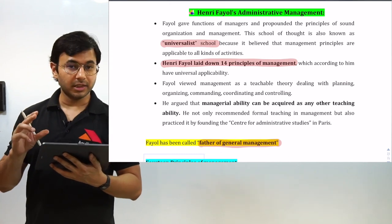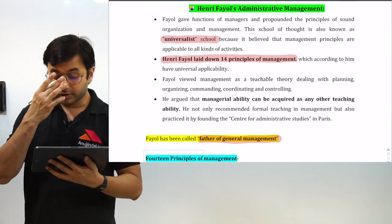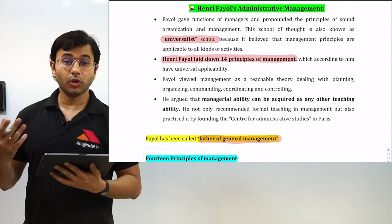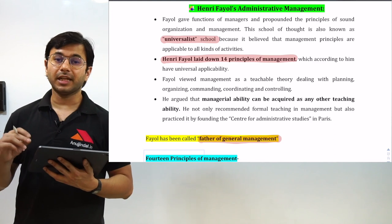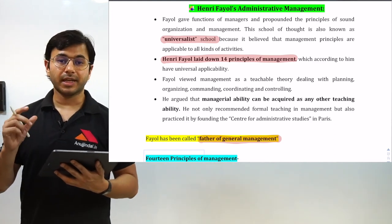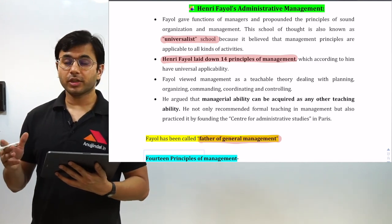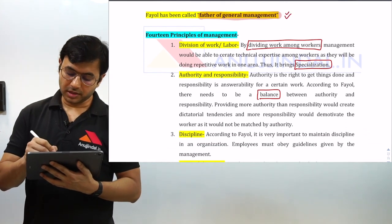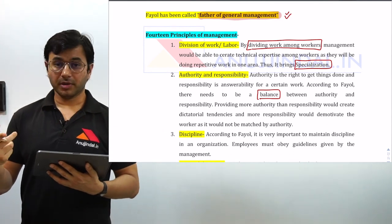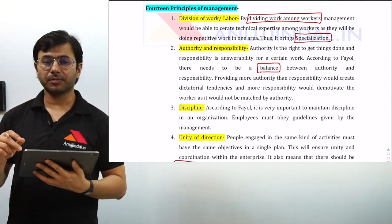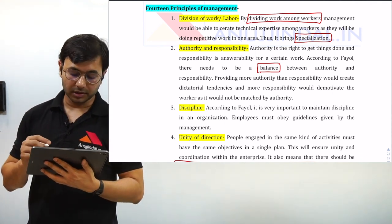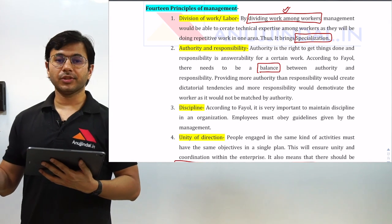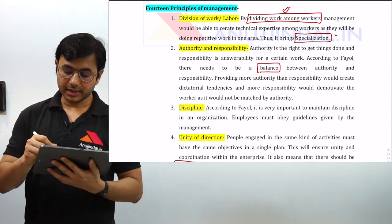Fayol is popularly known as the universalist theorist who gave 14 universal principles of management. He said these 14 principles can and should be applied in every organization across the board, whatever the organization might be. He is popularly called the father of general management. The first principle is 'division of work,' which simply says that work should be equally divided among all the workers. When work is divided scientifically, there will be specialization — the person repeatedly putting tires on a car becomes faster and more efficient.